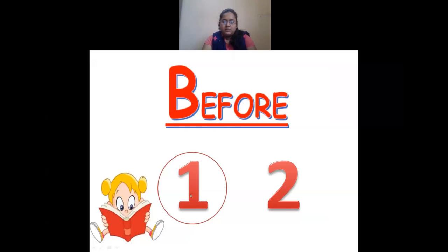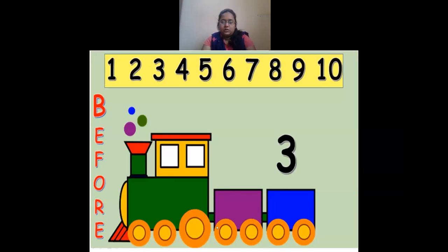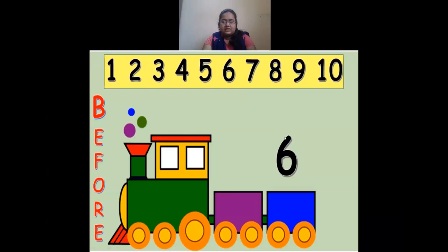Let's see some numbers and guess the before number. Here I have the number 3. What comes before 3? Counting: 1, 2, 3 — what came just before 3? It was 2. So 2 comes before 3. The next number is 6. What comes before 6? Counting: 1, 2, 3, 4, 5, 6 — what came just before 6? It was 5. So 5 comes before 6.